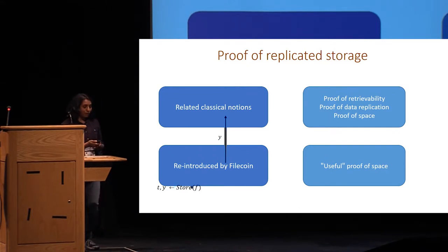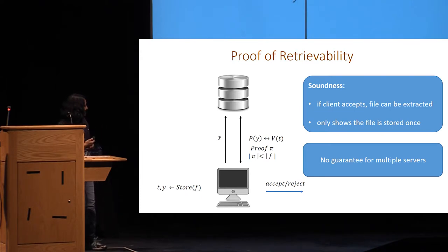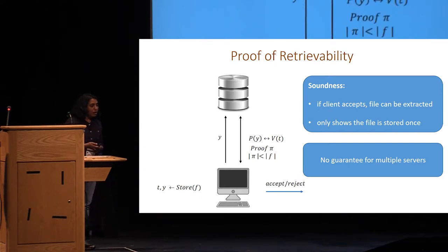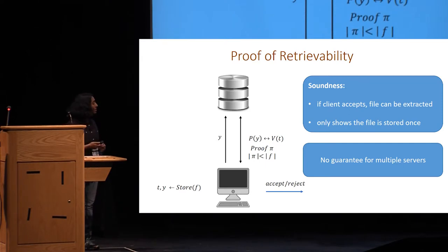Classical notions of proof of storage are not already proofs of replicated storage. Proof of retrievability is a solution to the following problem: a client would like to outsource the storage of a file to the server. There is a store algorithm that takes the file F to be stored, returns Y that is shipped off to the server, and some verification information T stored at the client side. Then there is an audit algorithm where the server can convince the verifier that it is still storing all of the client's data, and the client outputs a bit indicating whether it believes the server is storing the file.